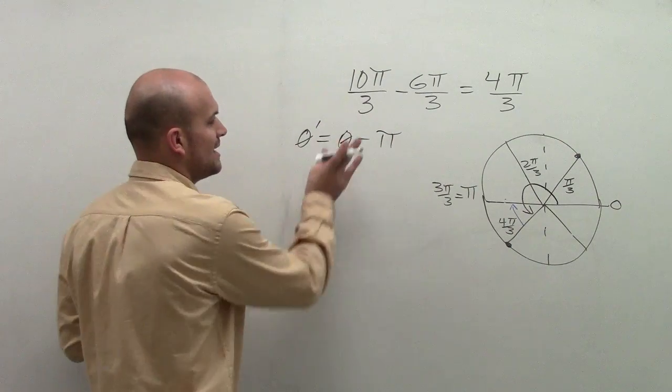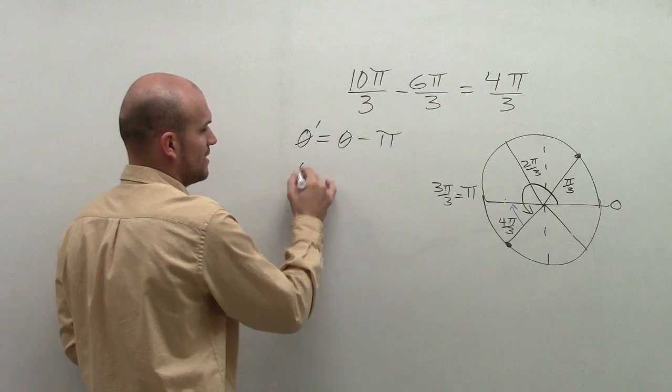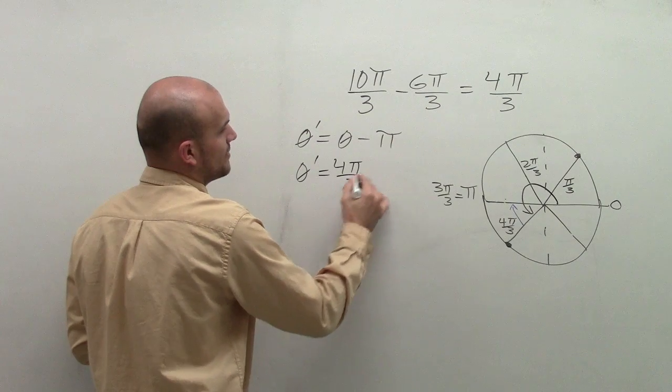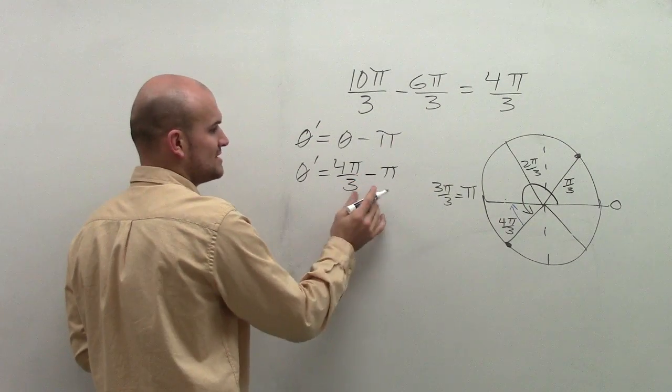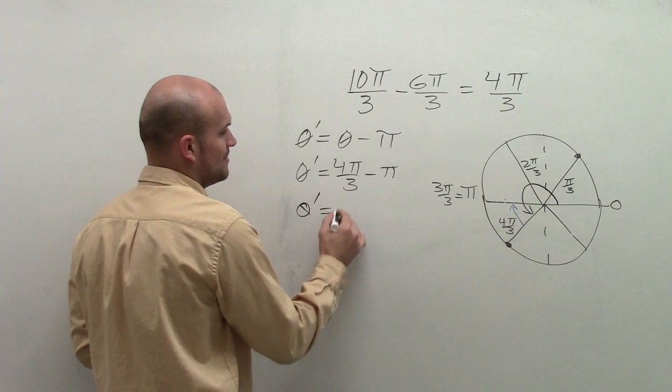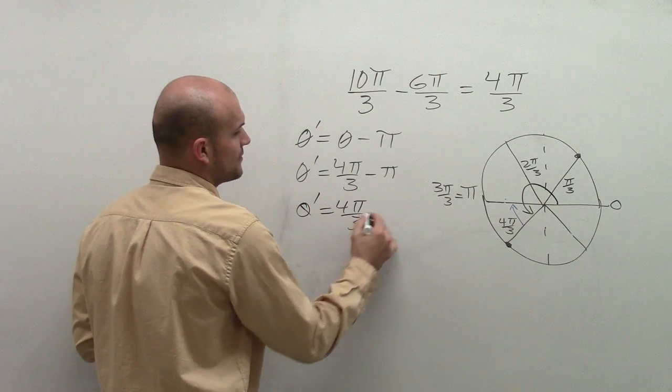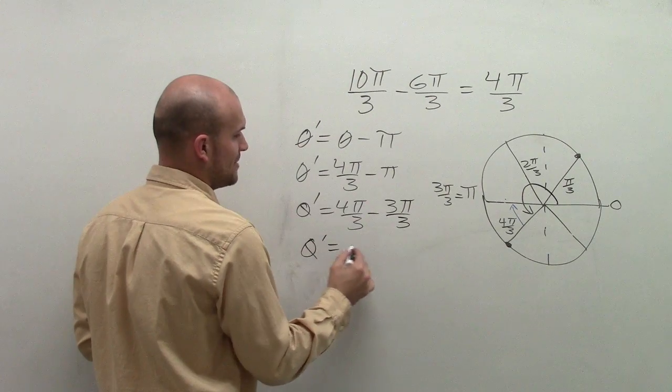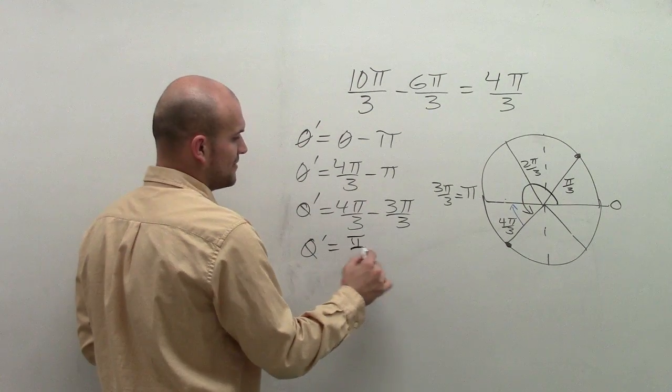Well, my angle in this case is going to be 4π/3. So θ' = 4π/3 - π, which I'll have the same denominator. So θ' = 4π/3 - 3π/3. Therefore, θ' = π/3.